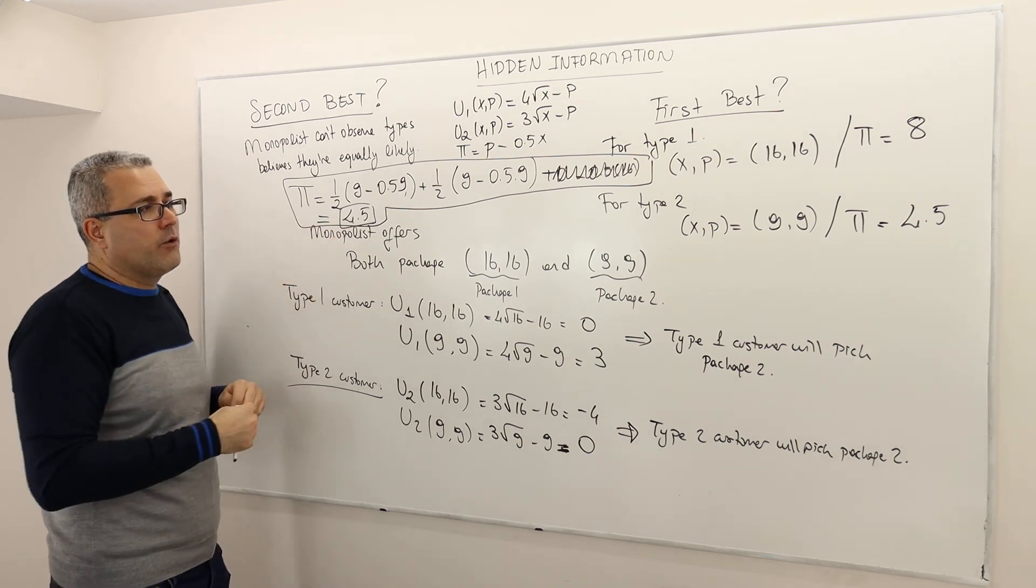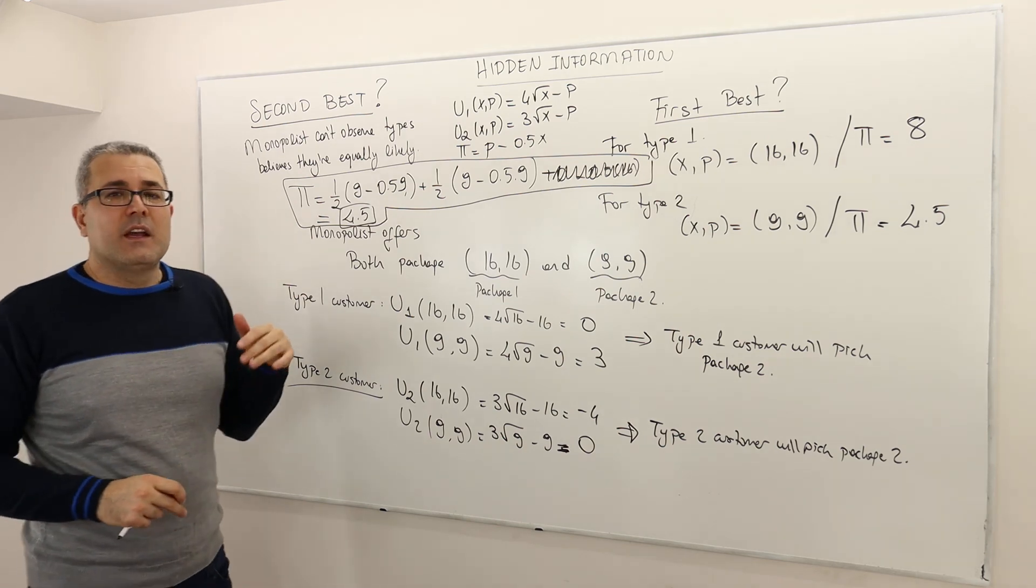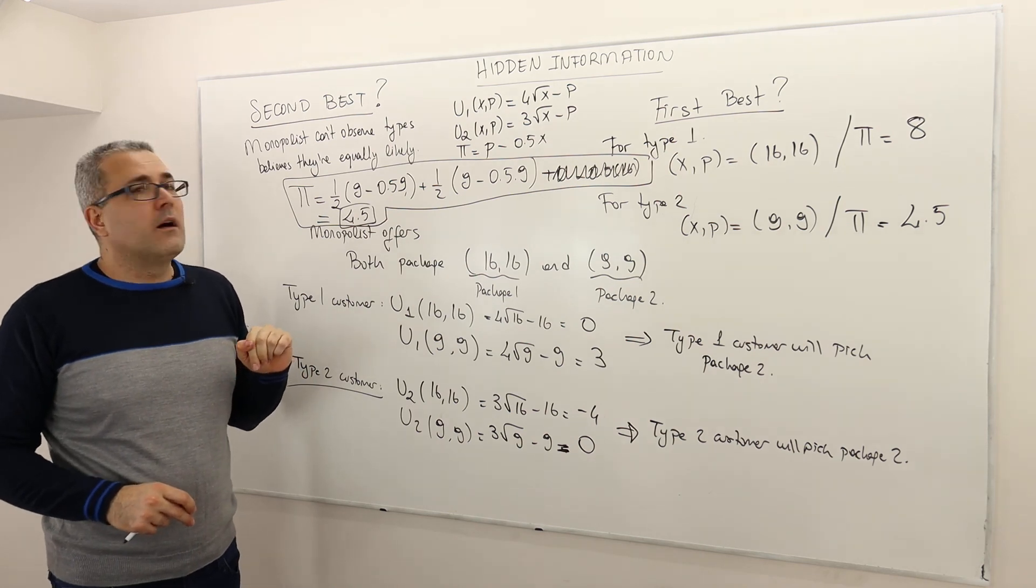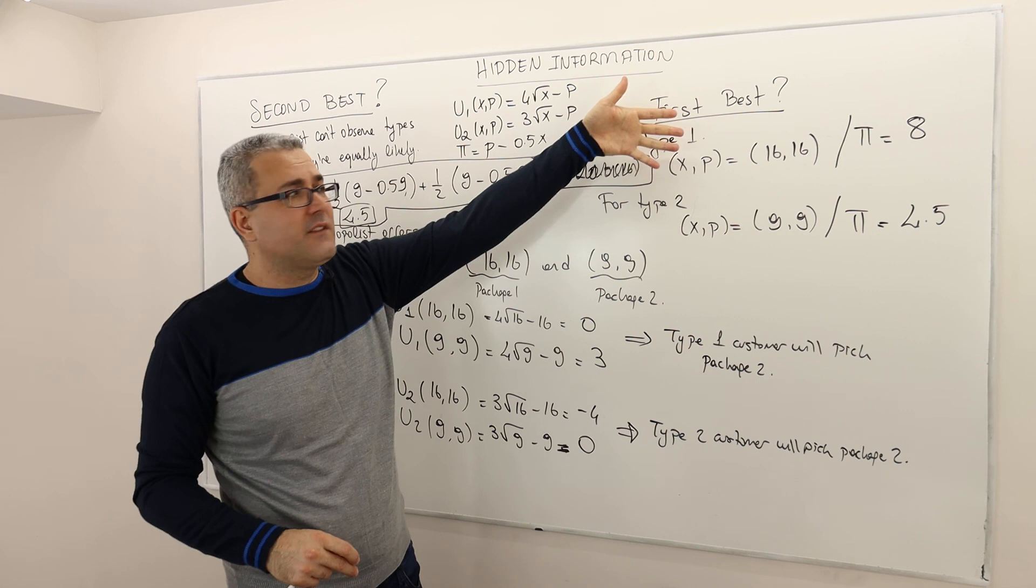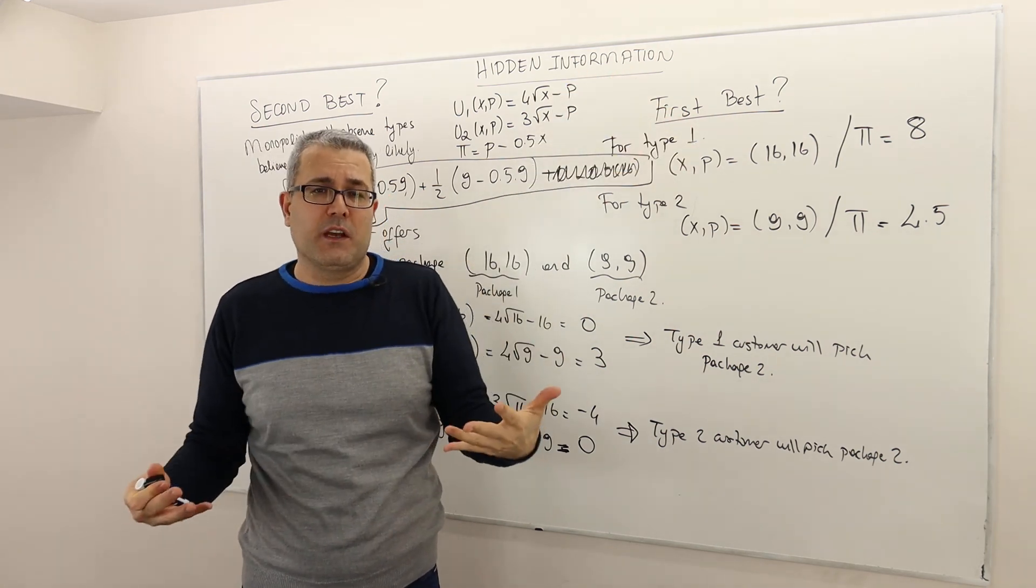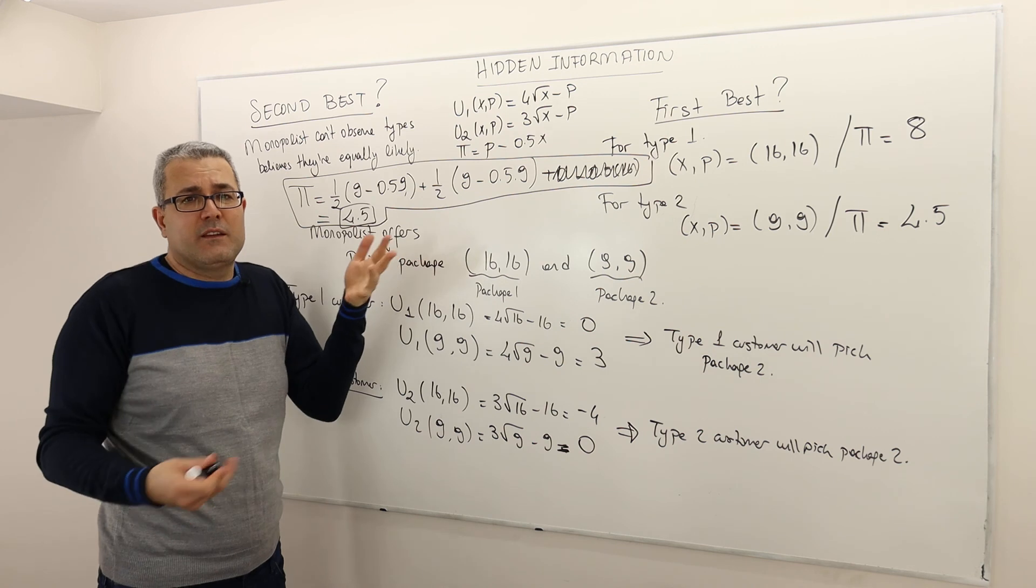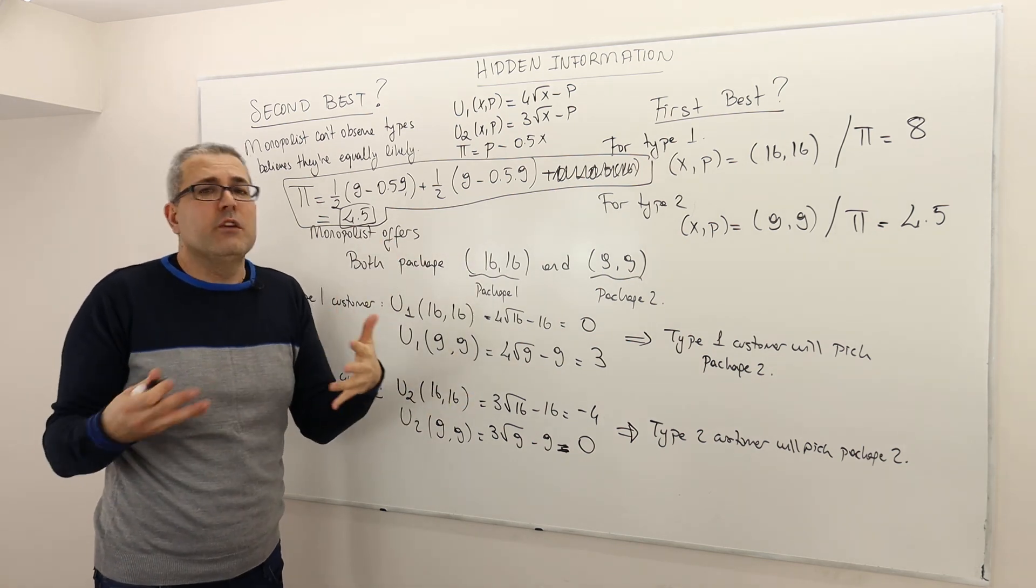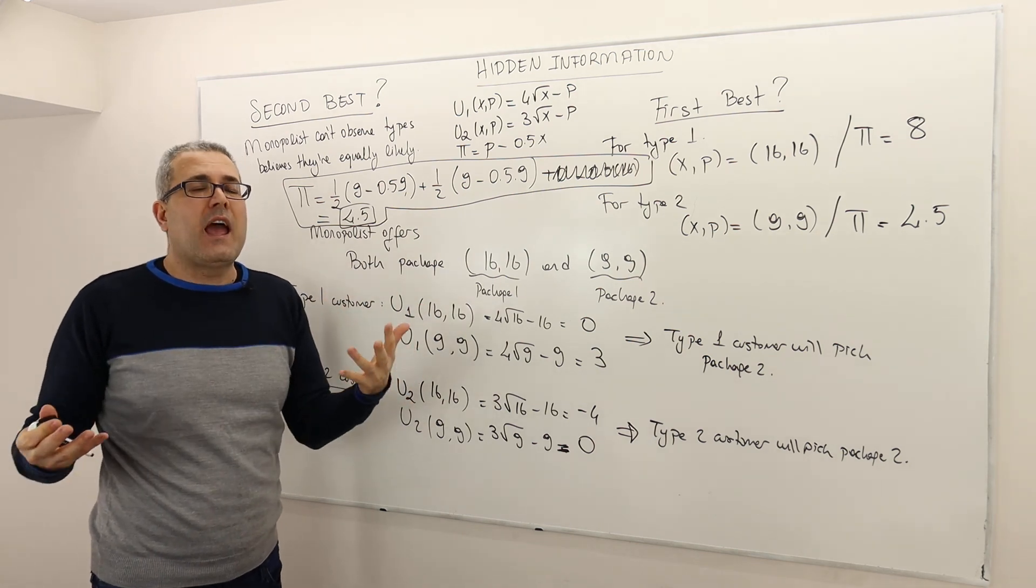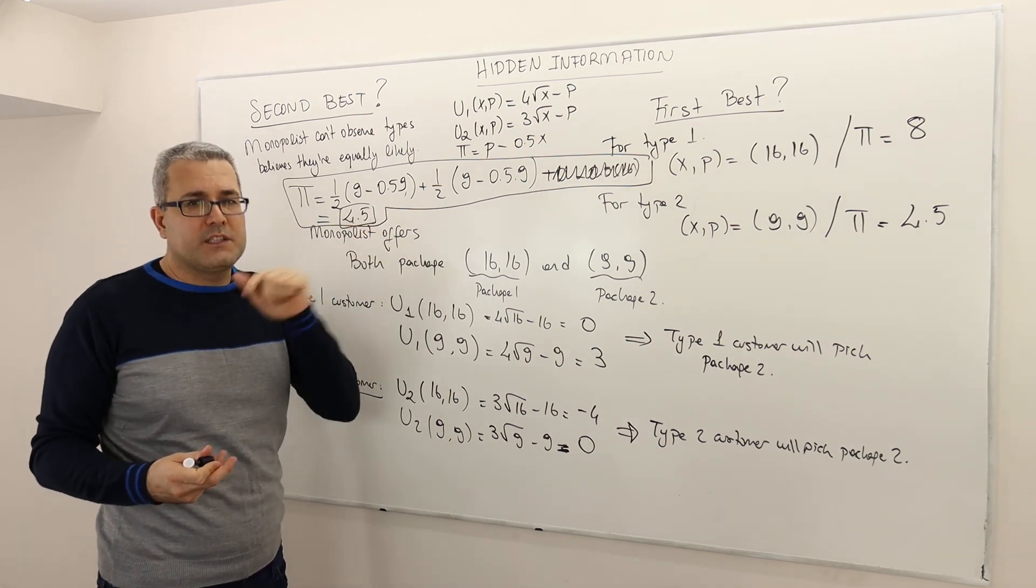And so in this case, its profit is going to be 4.5. But the question is, can monopolist achieve profit higher than 4.5? Well, don't forget, we call this first best, but this is the first best if monopolist can distinguish the types of the customer. So here, what I'm going to do in the second best, knowing that the monopolist cannot distinguish, I'm going to argue that monopolist should actually offer different two bundles. And by doing so, he can actually increase his profit more than 4.5. It's coming up next.